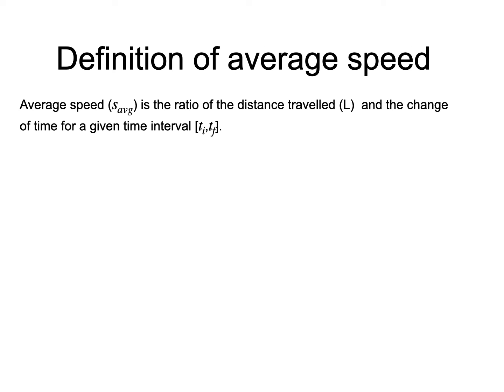In everyday language, speed and velocity are often considered to mean the same thing, but not in physics. The average speed, labeled s_avg, is a physical quantity evaluated as the ratio of the distance traveled and the change of time over a particular time interval.